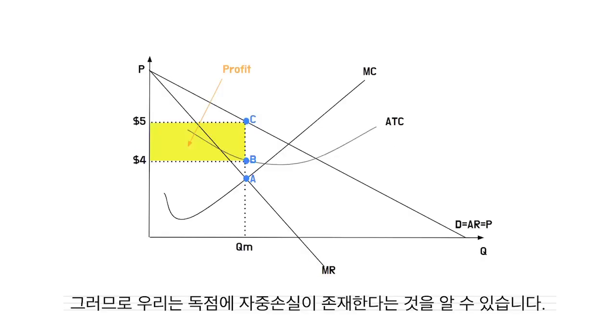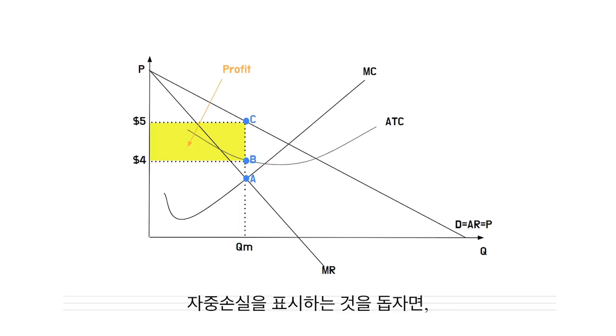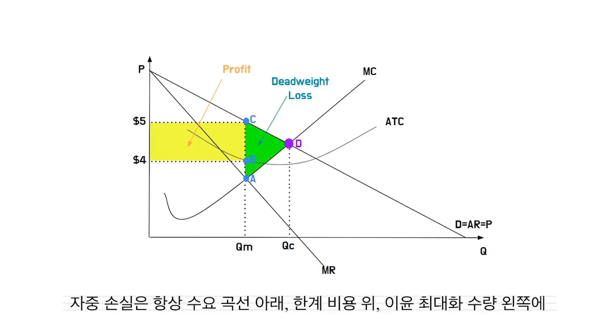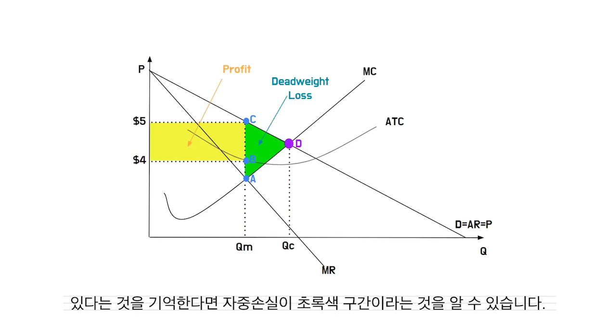Then now, we can know that there is a deadweight loss in a Monopoly. For help labeling the deadweight loss, imagine drawing an arrow pointing the output as if it were a competitive market. The deadweight loss might be the green area, remembering that the deadweight loss is always below the demand curve, above the marginal cost, and to the left of the profit-maximizing quantity.